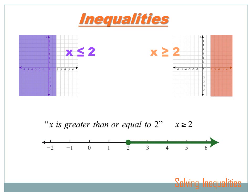We can also put inequalities on a coordinate plane. If we had the inequality x is smaller than or equal to 2, there's where 2 is on the number line, and there's where 2 is on the coordinate plane. All these points on the coordinate plane in purple would have an x that was less than or equal to 2. For x is greater than or equal to 2, all the colored area over here has x's that are greater than or equal to 2.